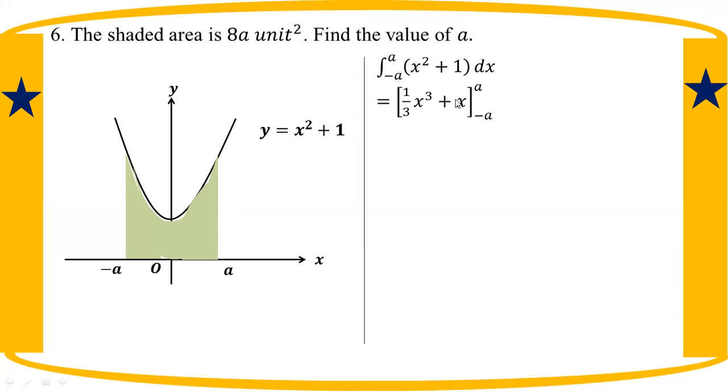Upper limit x cubed by 3 plus x minus lower limit x cubed by 3 plus x. This gives us a cubed by 3 plus a minus minus a cubed by 3 minus minus a. From zero limit, we get 2 by 3 a cubed plus 2a.